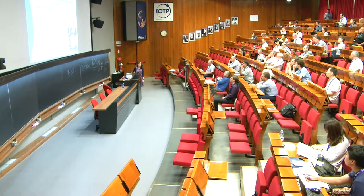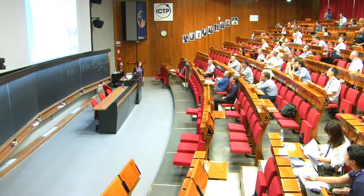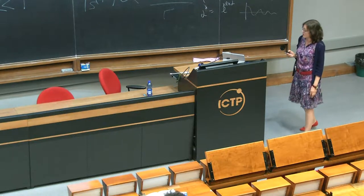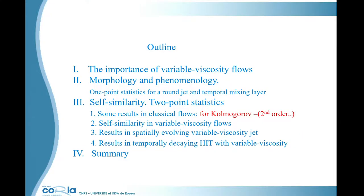This is part of a larger question: the appraisal and prediction of variable viscosity flows. You'll see that if things look relatively simple for classical flows, things are much more complicated for variable viscosity flows. The outline: I'll start with the importance of variable viscosity flows with two short examples, continue with morphology and phenomenology, look at the round jet and a temporal mixing layer, then go to the core subject of self-similarity using two-point statistics, first for constant viscosity, then variable viscosity flows, and conclude.